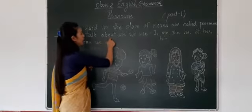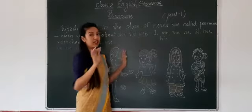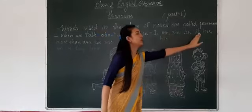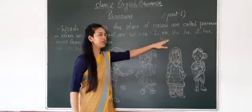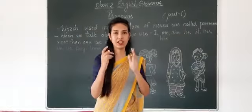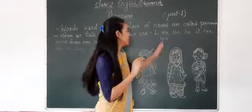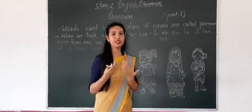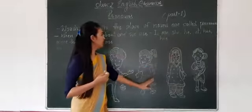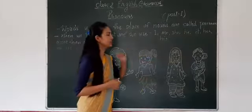When we talk about one person or thing, we use pronouns like I, me, she, he, it, her, and his. She is used for a girl.